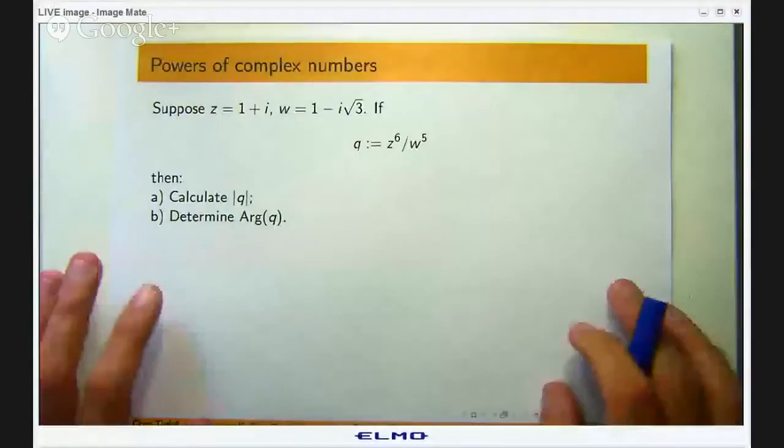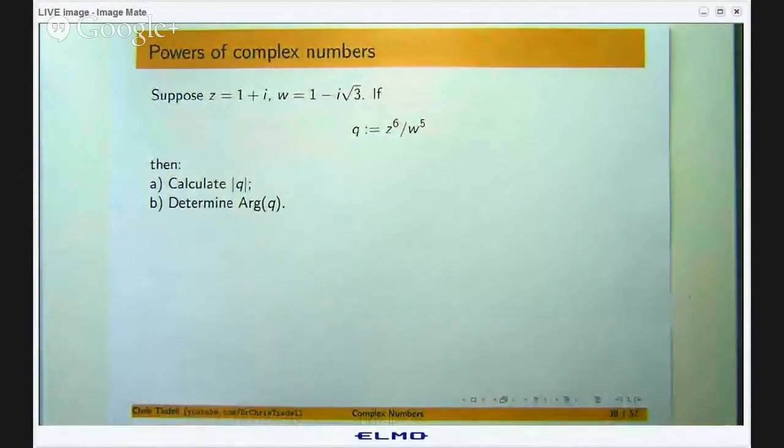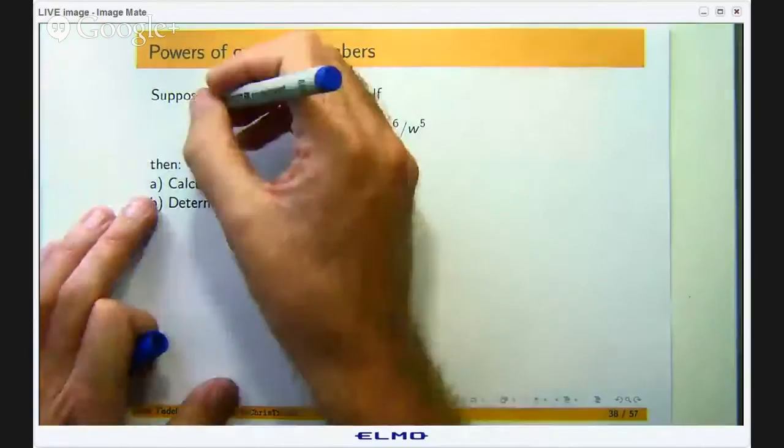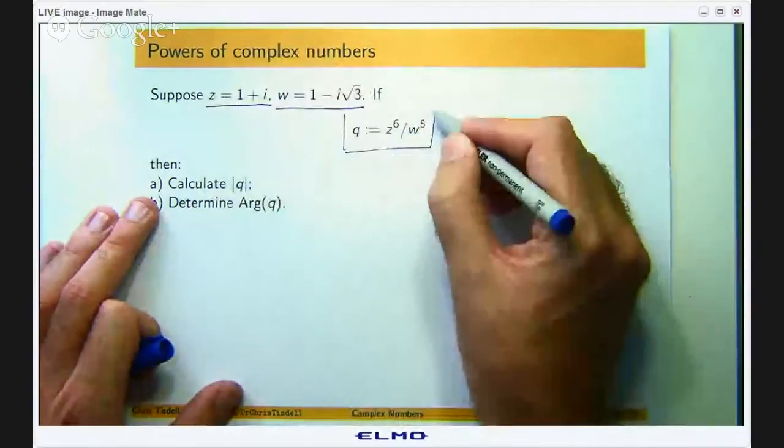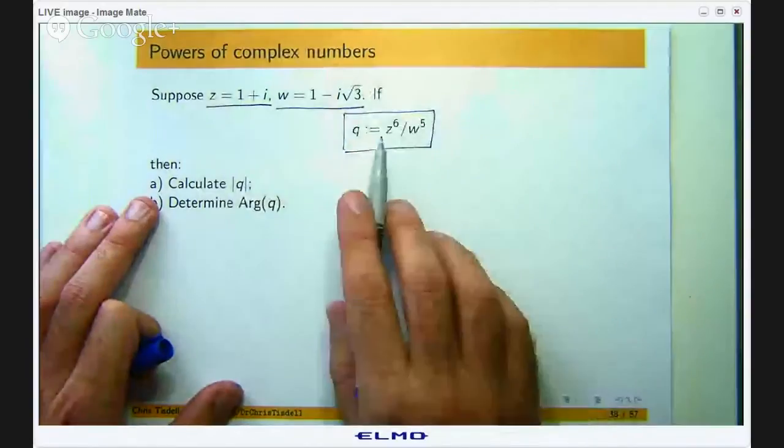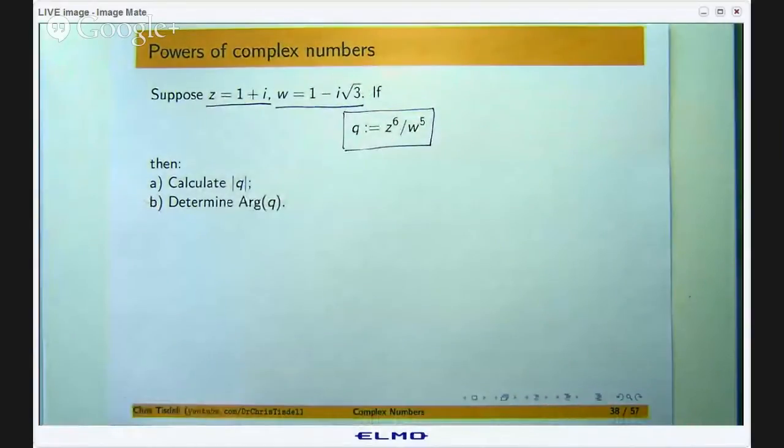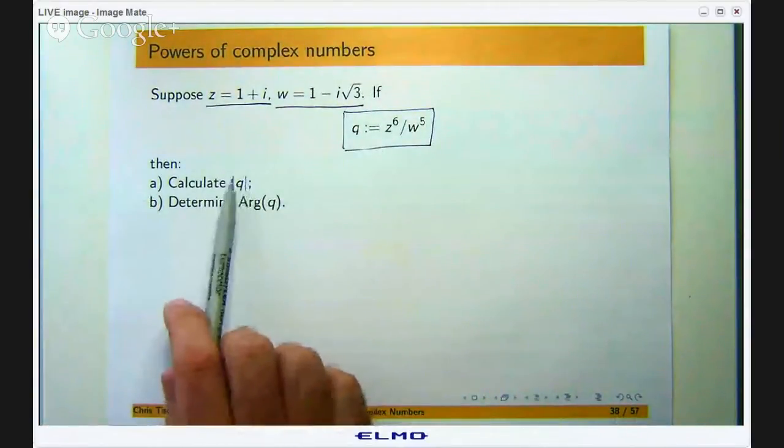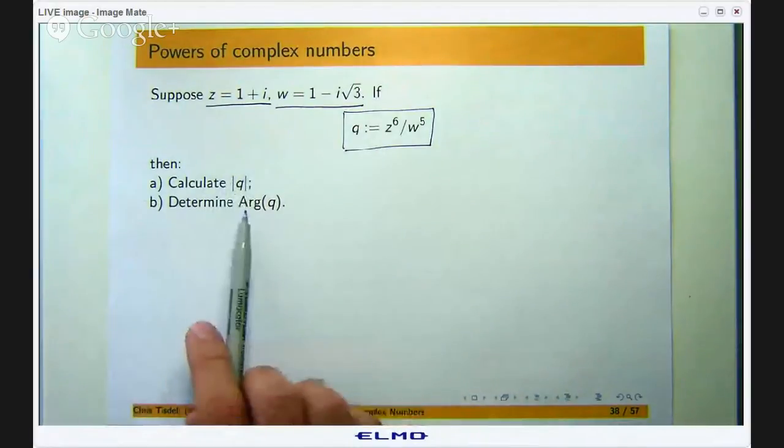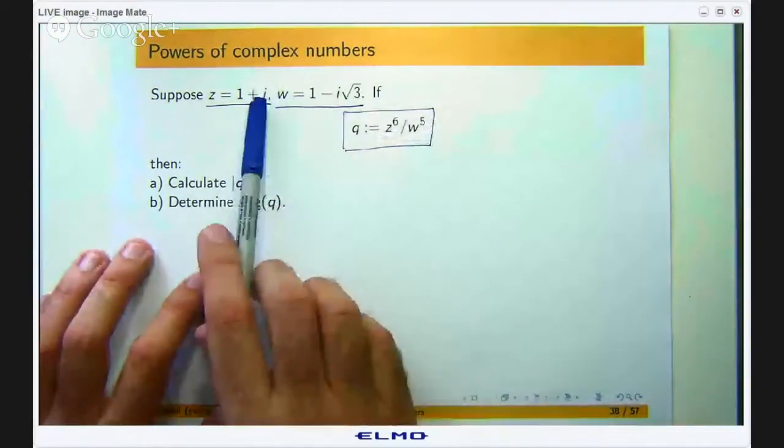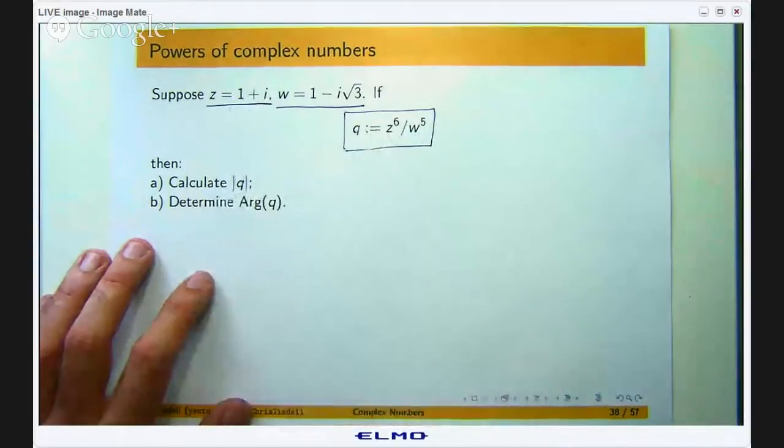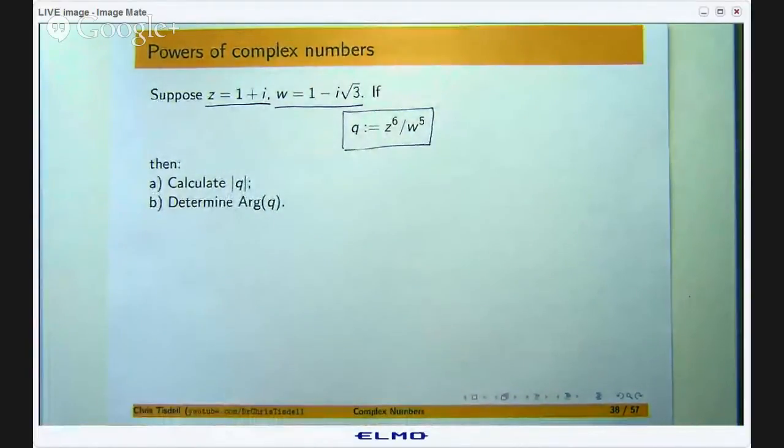Here is the example that I am going to look at. You are given two complex numbers z and w, and q is defined to be this quotient involving z and w. We are asked to calculate the modulus of q and the principal argument of q. So we have got two complex numbers, we raise them to various powers and divide and get a new complex number. What is the modulus or the length of that new complex number and what is the principal argument?